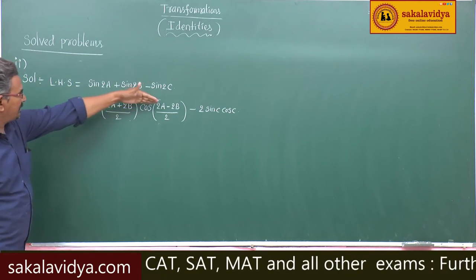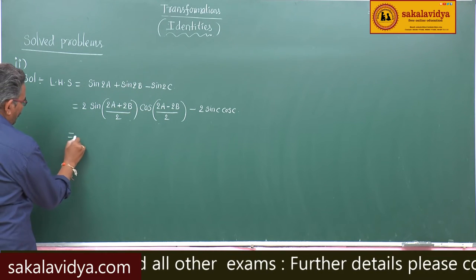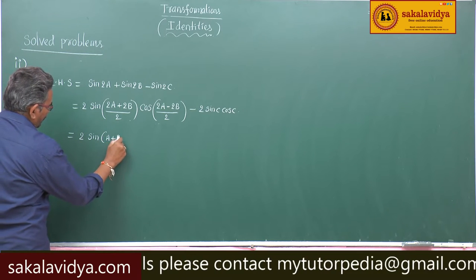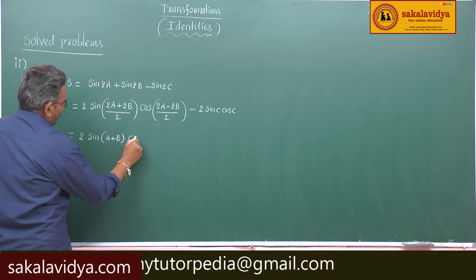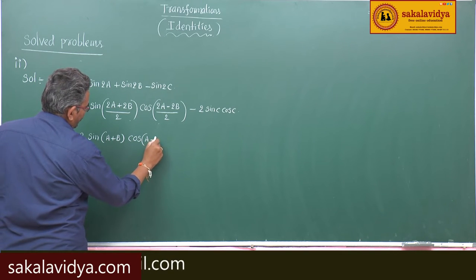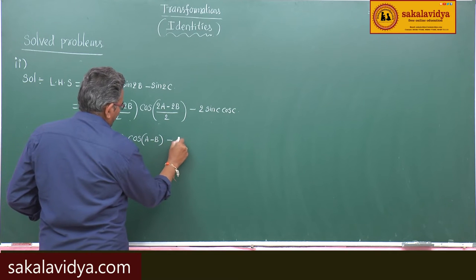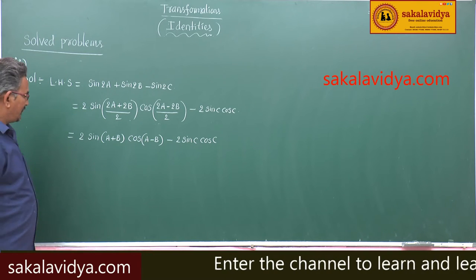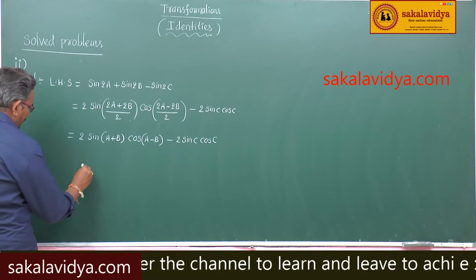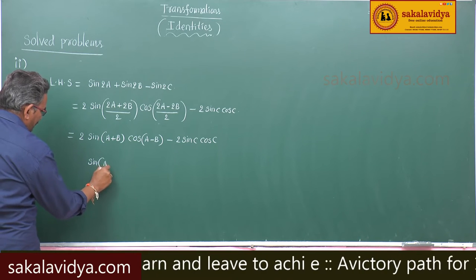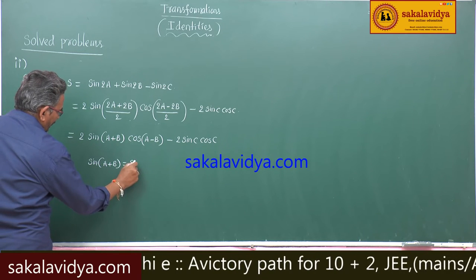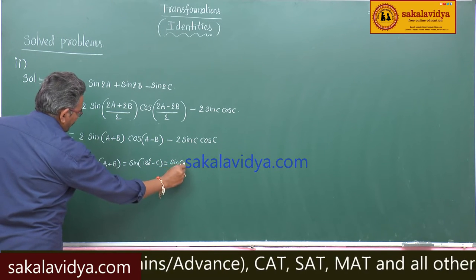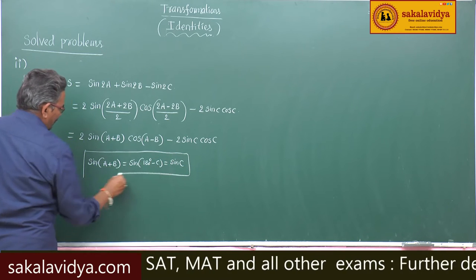Taking 2 common and cancelling, we have 2·sin(a+b)·cos(a-b) minus 2·sin(c)·cos(c). Now, sin(a+b) equals sin(180° - c), which is equal to sin(c). We have this result.